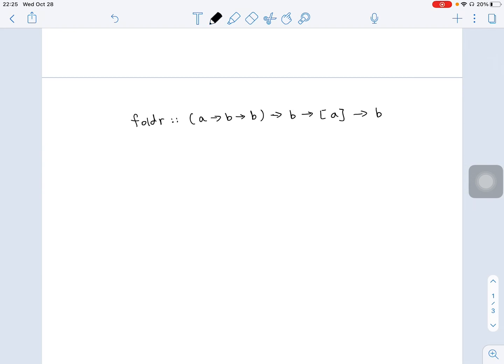Basically, FoldR applies the function f to every element of list a, and accumulates the result to b. This b, the parameter b here, is usually what we call the initial value.